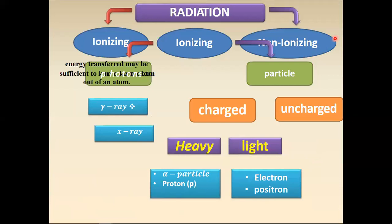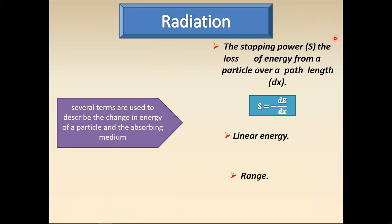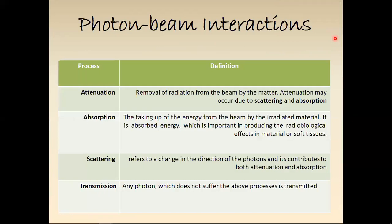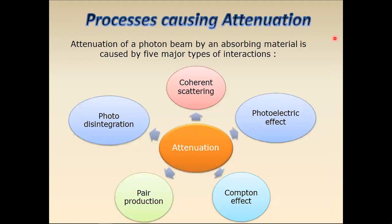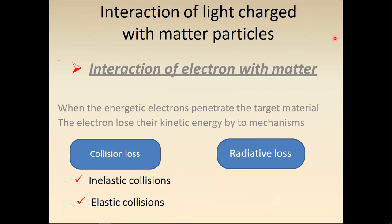Application of radioactivity involves interaction of radiation with matter. Radiation ionizes matter and produces particles. Heavy particles include alpha particles and protons; light particles include electrons and positrons. For photon beam interaction, the key processes are attenuation, absorption, scattering, and transmission. The processes causing attenuation are: coherent scattering, photoelectric effect, Compton effect, pair production, and photo-disintegration — these will be discussed in Chapter 8.